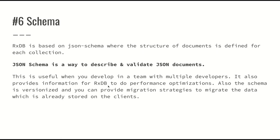Using JSON Schema is especially useful when developing in a team with multiple developers, because a new developer can read the schema and immediately understand what a collection is about. It also provides information for RxDB to do performance optimizations. Additionally, the schema is versioned and you can provide migration strategies to migrate data already stored on clients — which is important when you need to map or migrate client-side data to a new format.